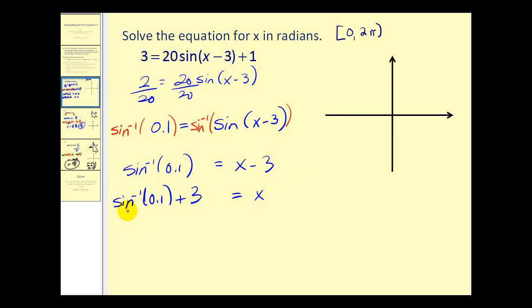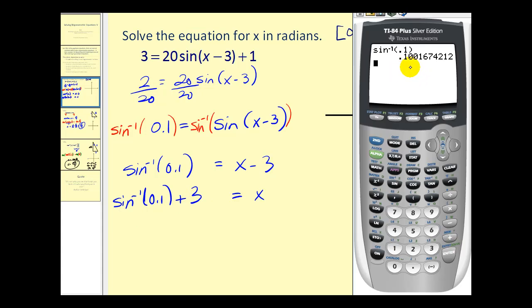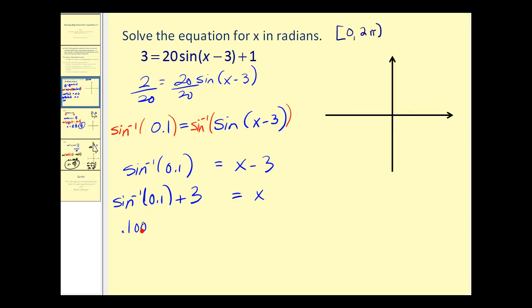We'll add 3 to both sides. Now let's go to our calculator to evaluate inverse sine of 0.1. And this returns an angle of approximately 0.1002 radians.